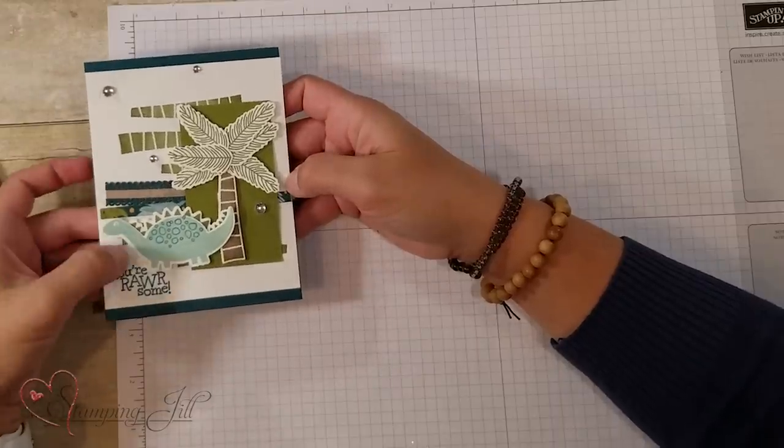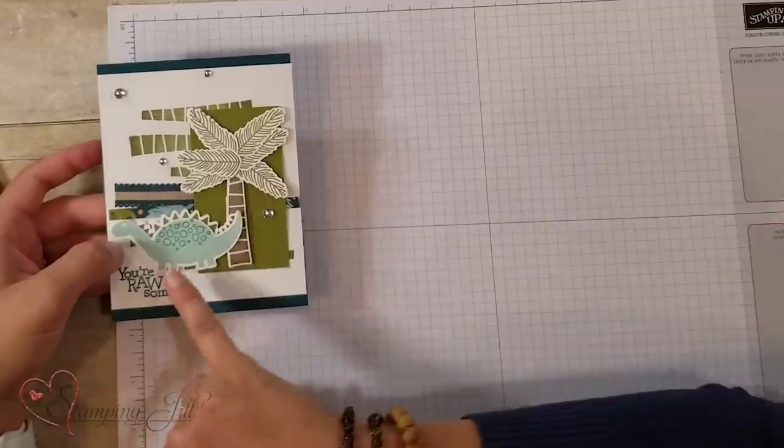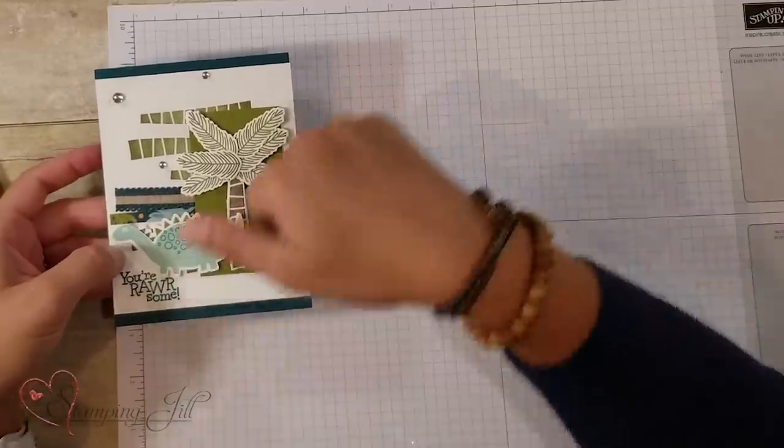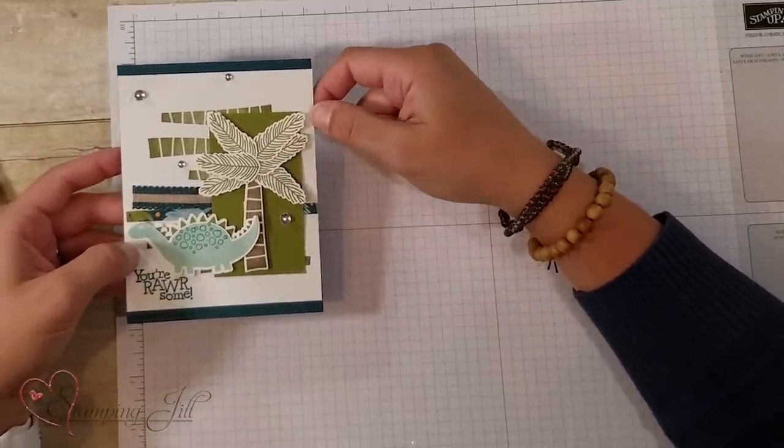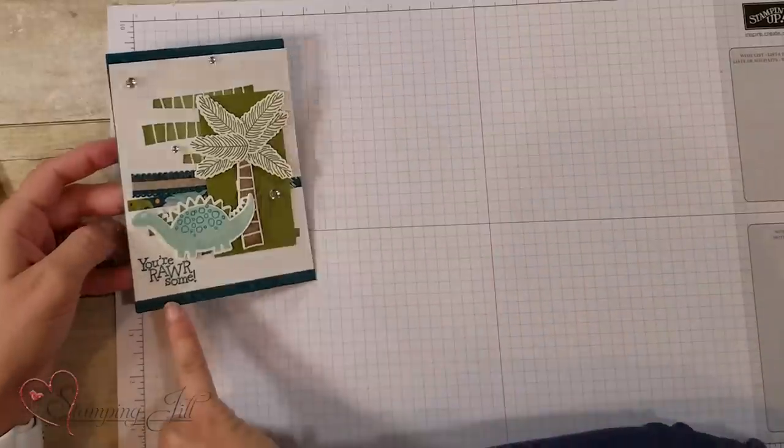I love this guy. I stamped him. You can add dimension. There are these cute little texture stamps in there. And then I made this little palm tree too. So cute. And you're rarsome. Is that how you'd say it? Rarsome or rarsome?